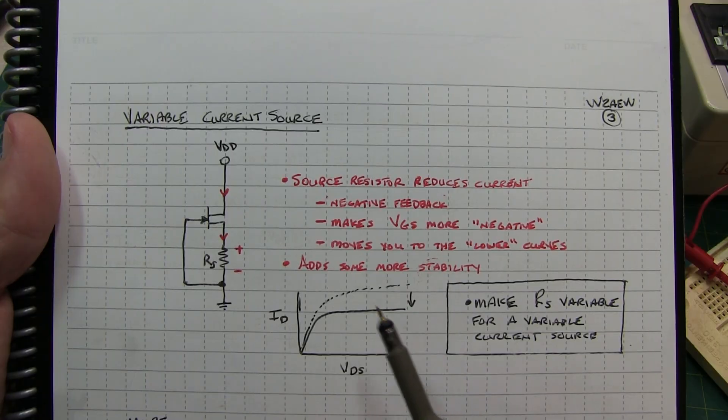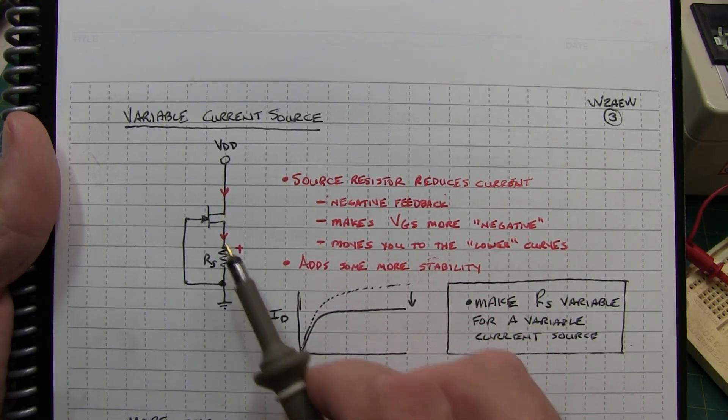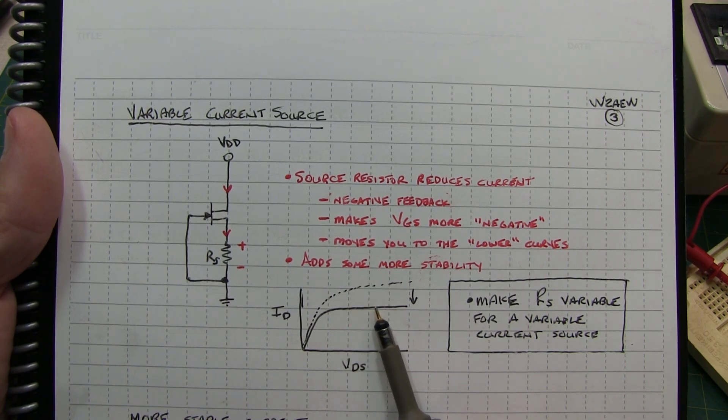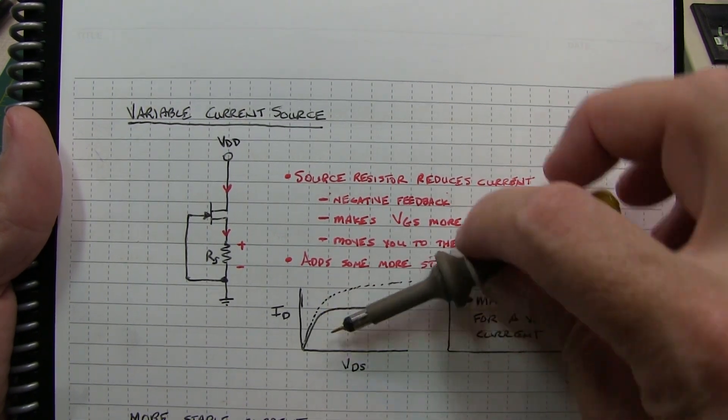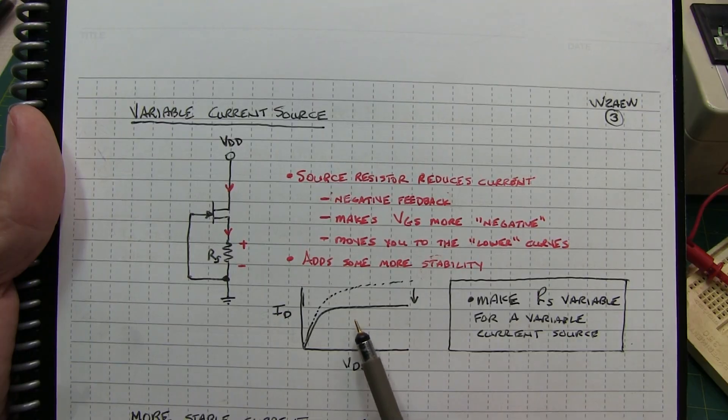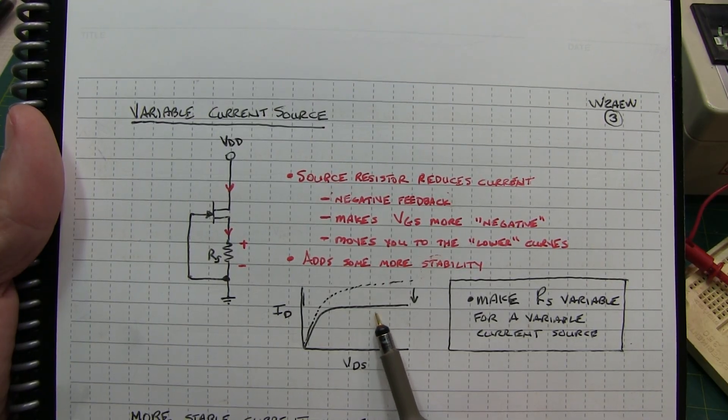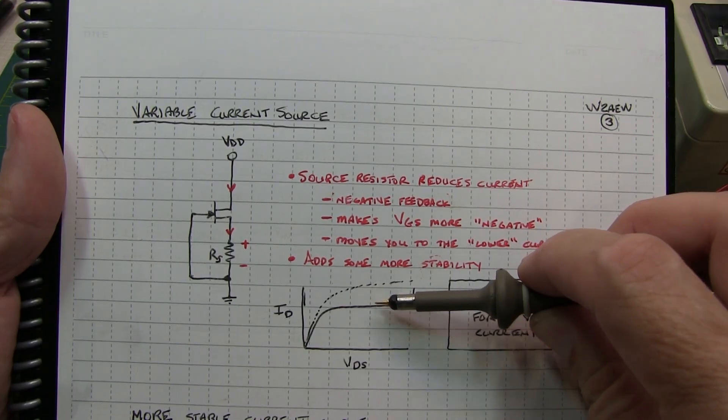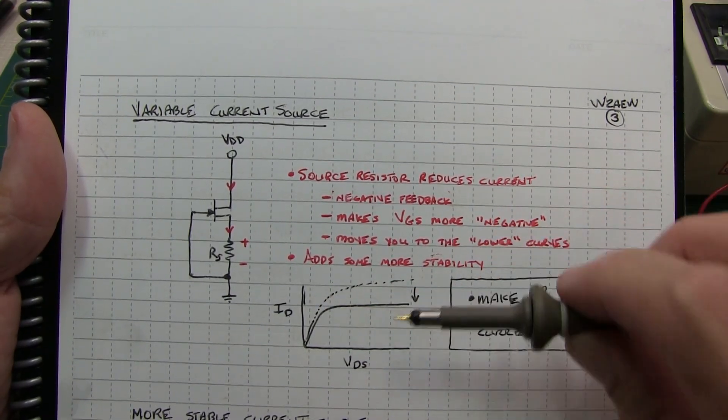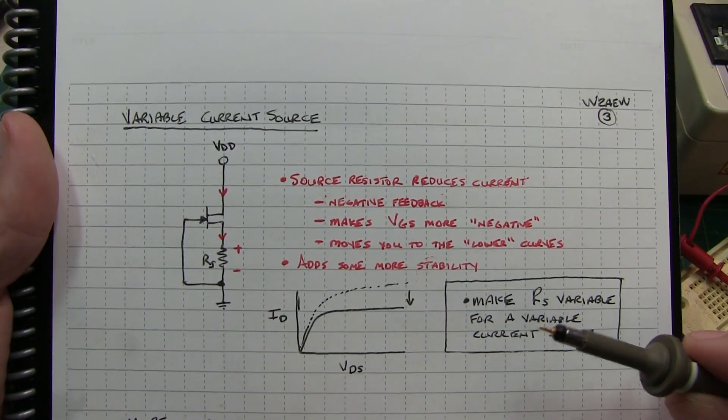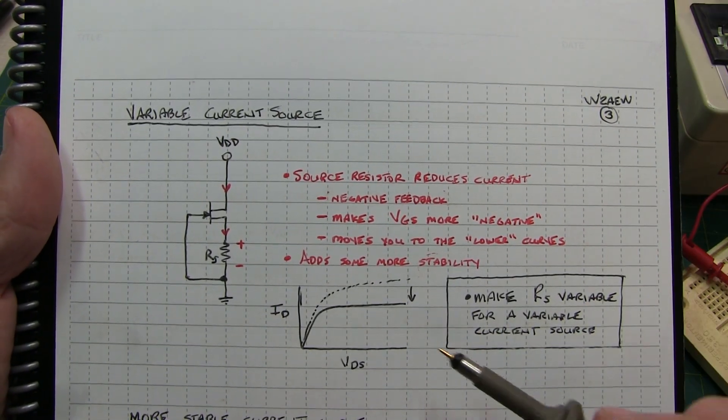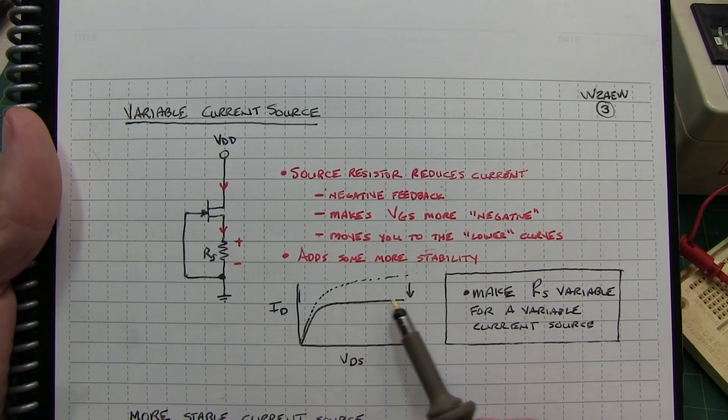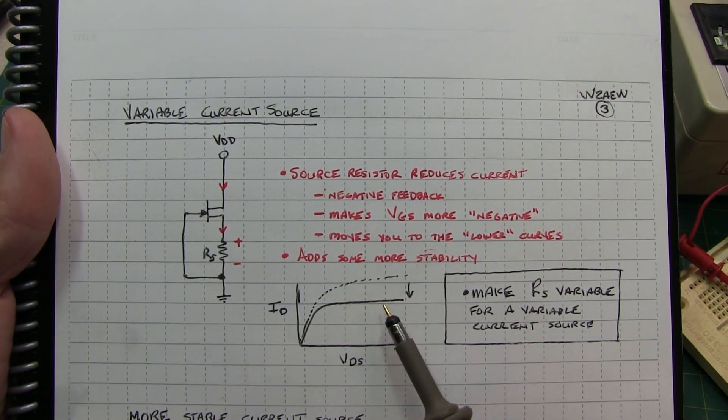Now the reason we were seeing a change in the current source value when we changed the voltage is because we're working on one of these curves, and it's not perfectly flat. It's got a little bit of a tilt to it. So a small change in VDS, even on this portion of the curve, gives you a very small change in that current. Again, it's a measure of the output resistance or output impedance. There is something we can actually do about that and make this even a more ideal current source where you have less of a variation by flattening this curve out. Let's take a look at that variation to this circuit.